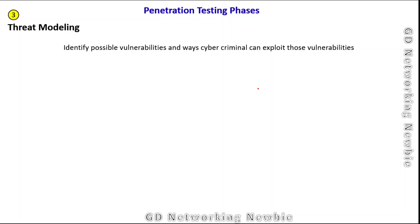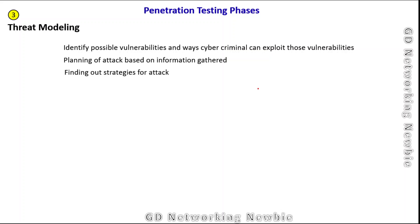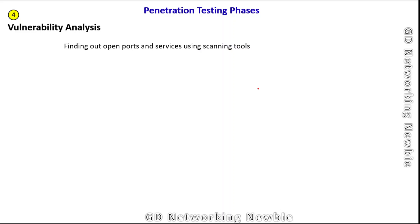The third phase is threat modeling, where we identify possible vulnerabilities and the ways those vulnerabilities can be exploited by external entities or cyber criminals. In threat modeling, we plan attacks based on information gathered in previous phases — deciding what kind of attack to launch against the target organization and finalizing the strategies for those attacks.